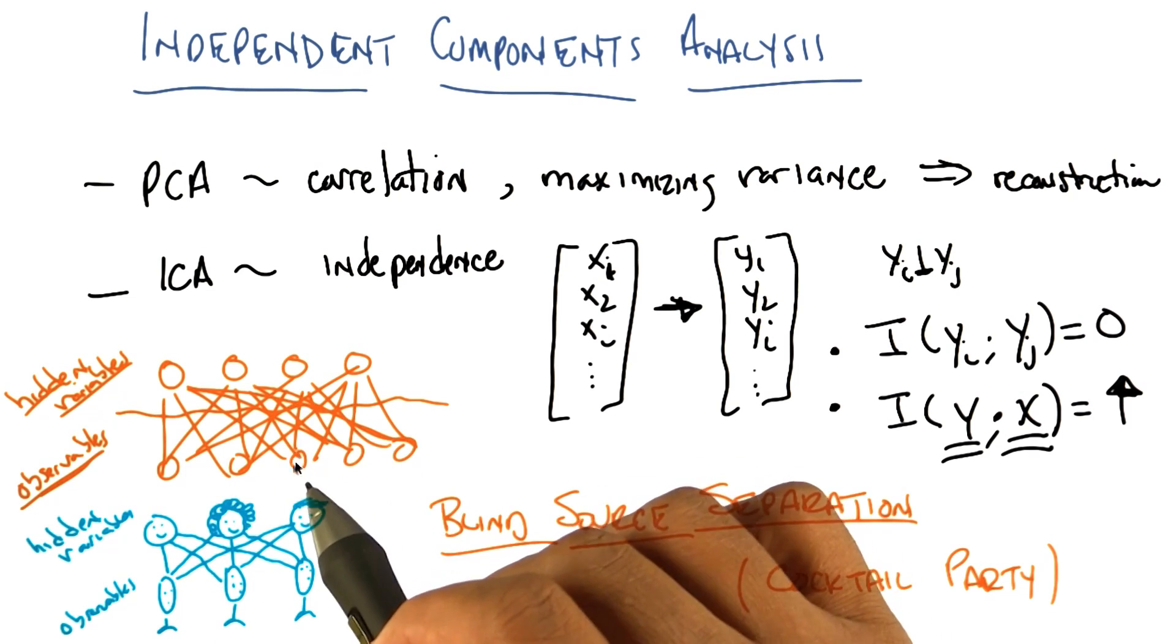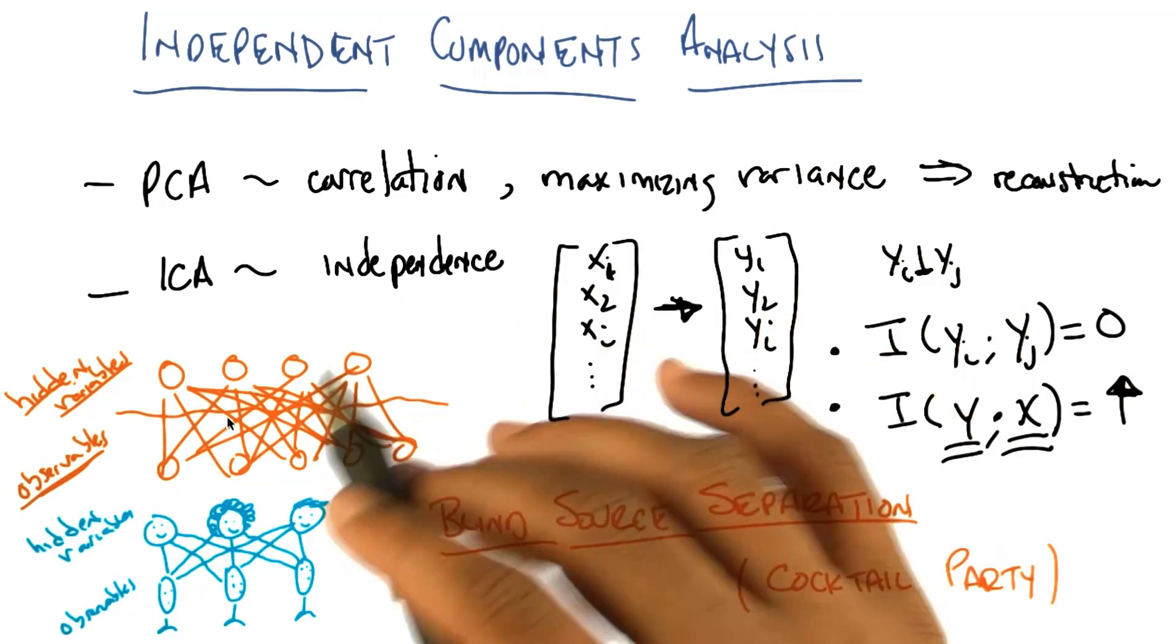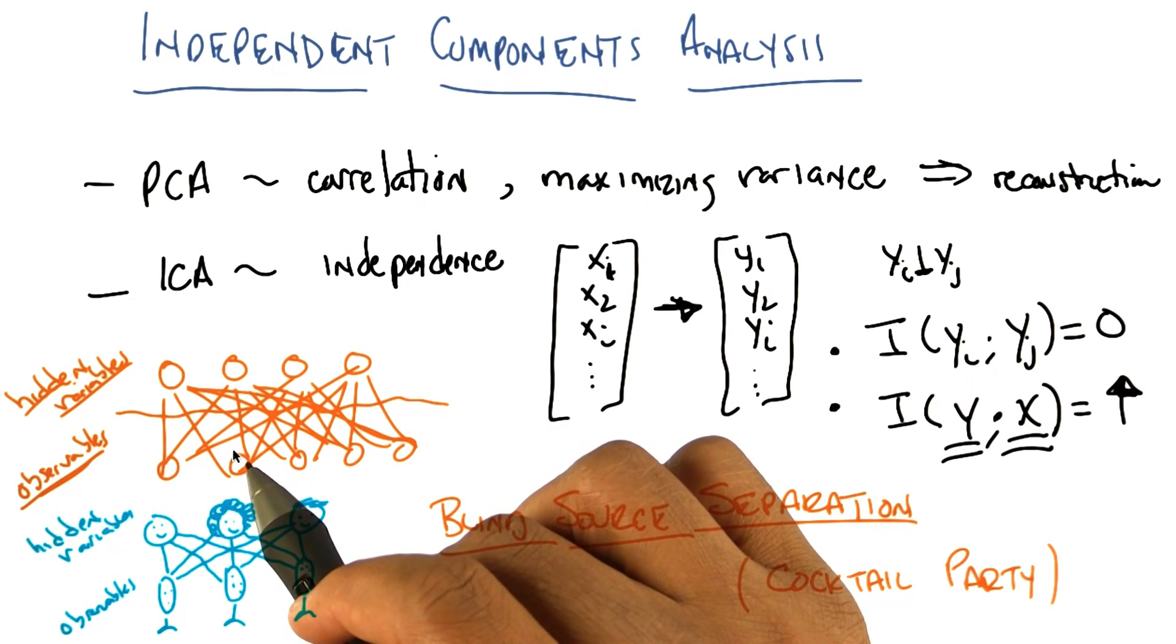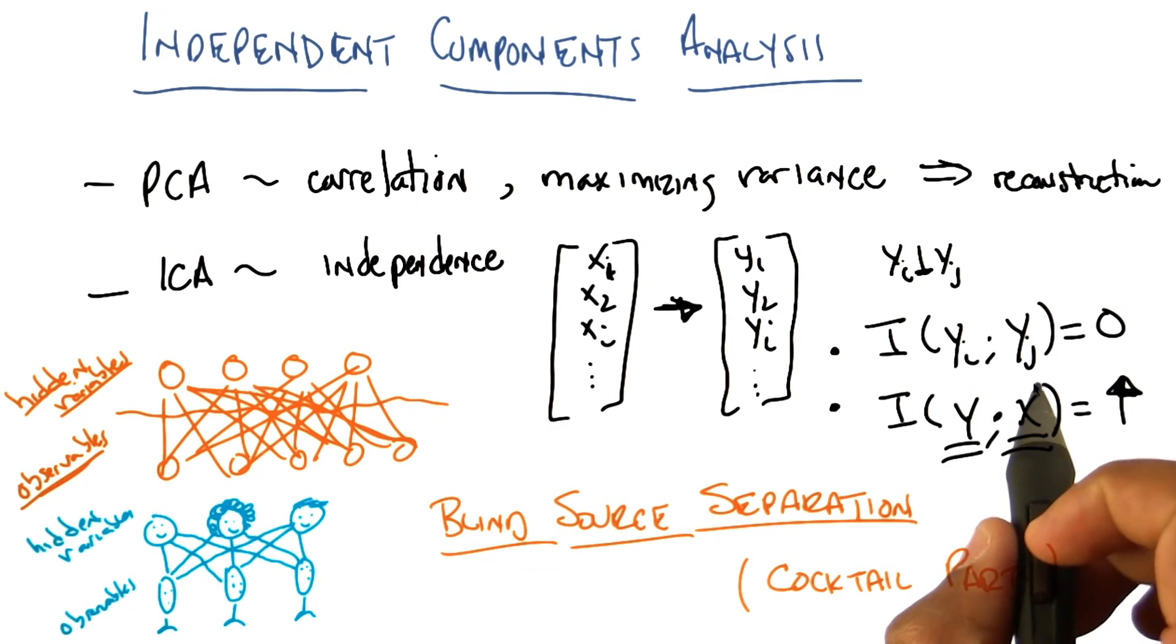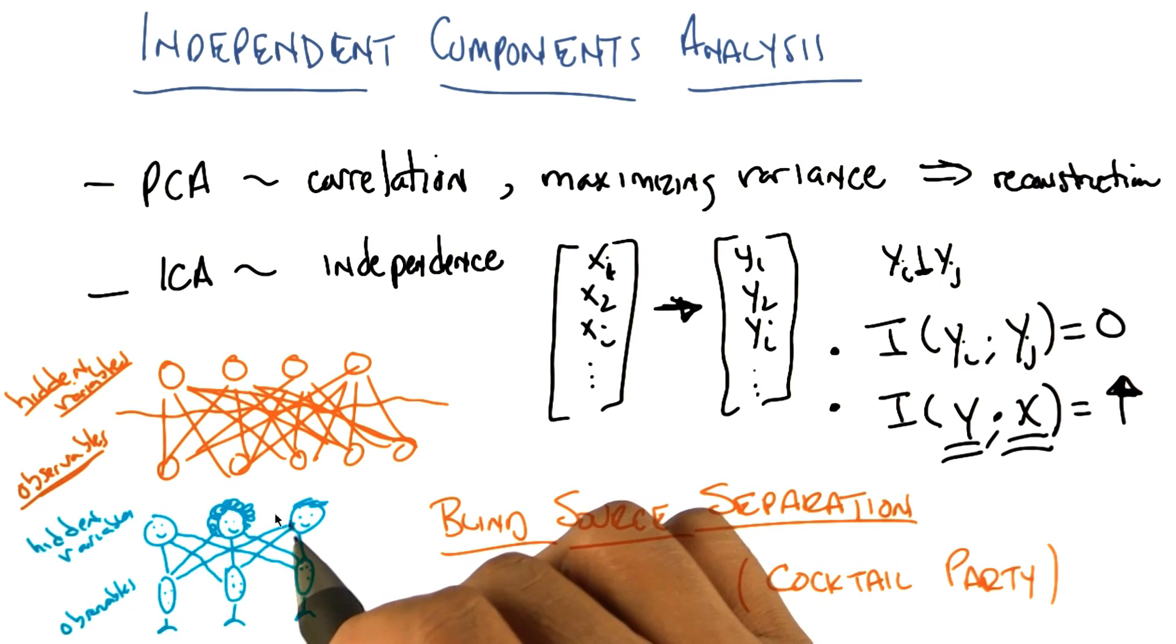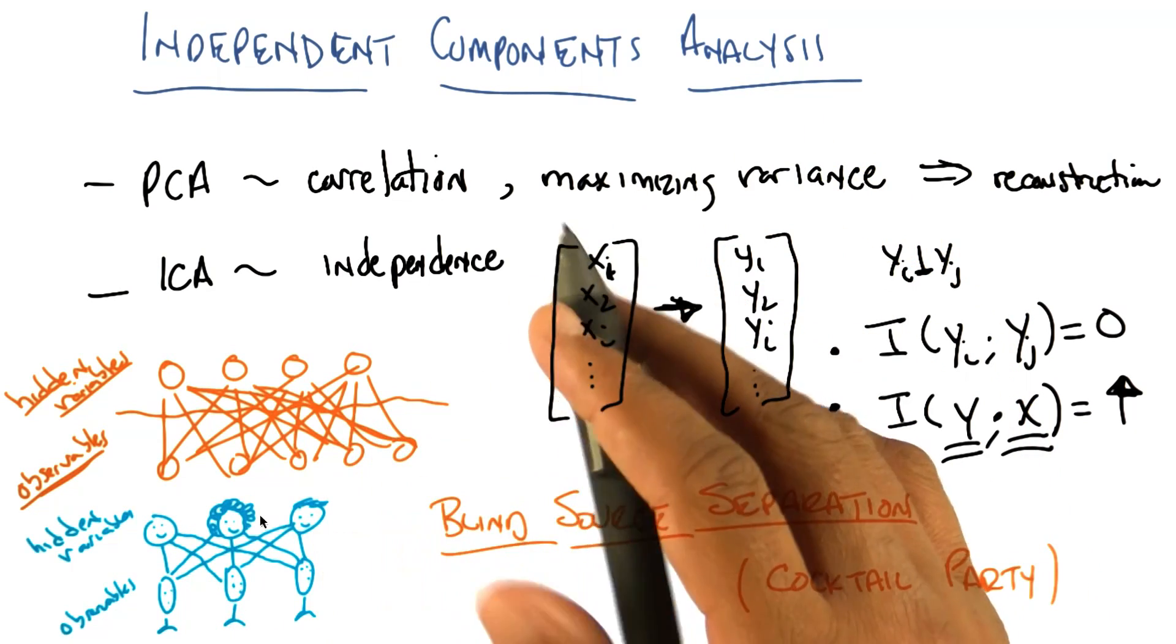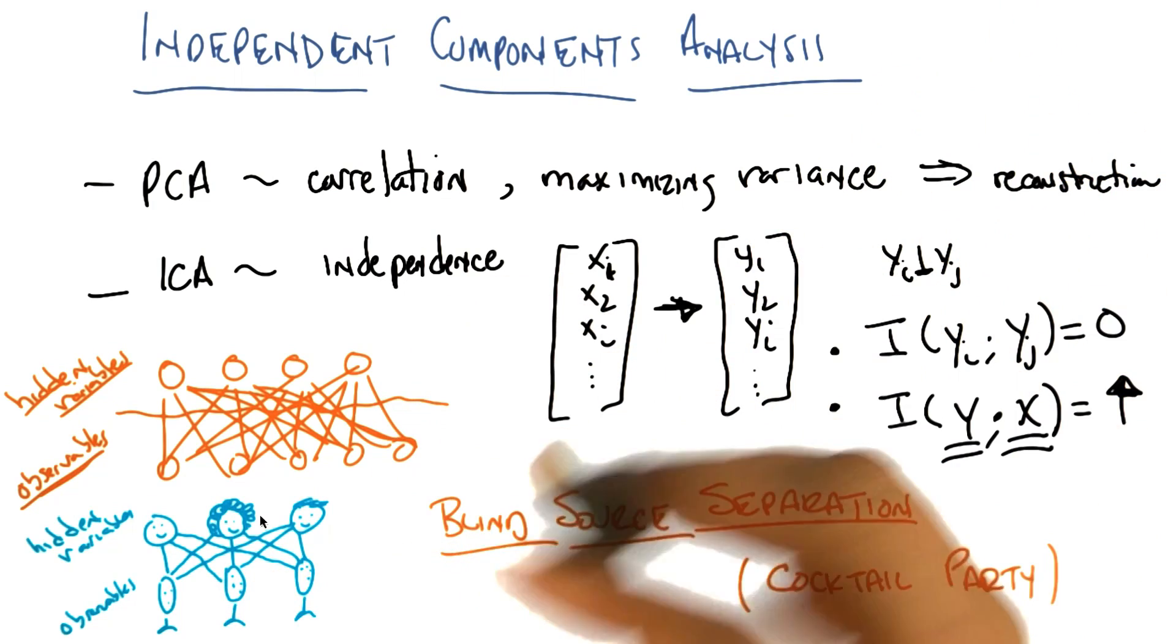Now there's a lot of details here. And again, when you read the material, you'll see exactly how independent components analysis works. But intuitively, all it's doing is taking this particular model and by using mutual information directly to find things that are independent of one another, while not losing any information from the observables, it's able to reconstruct these sounds. And it's able to do this incredibly quickly and incredibly well under a large number of conditions.